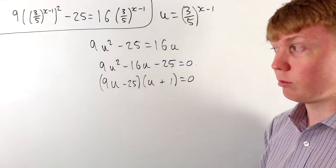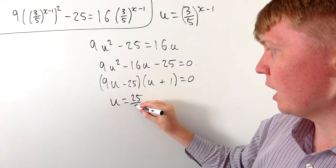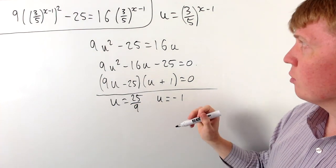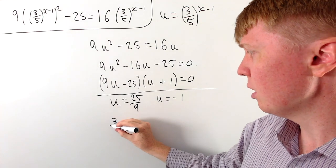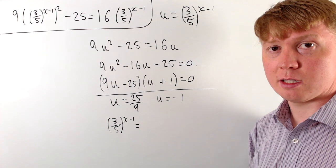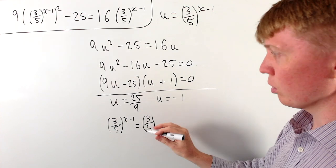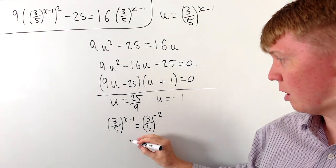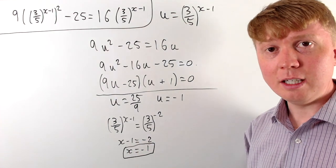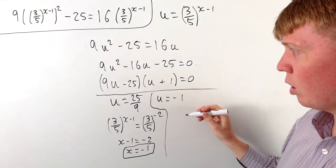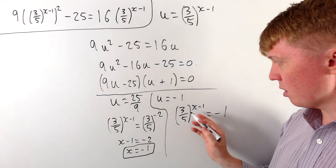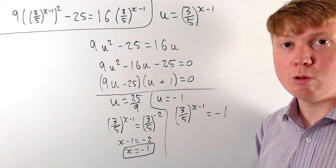We can read off the values of u. First, u equals 25 over 9, or u equals negative 1. With u equals 25 over 9, remember u was 3-fifths to the x minus 1, so 3-fifths to the power of x minus 1 equals 25 over 9. Now 25 over 9 is a nice power of 3-fifths: it equals 3-fifths to the power of negative 2, since we take the reciprocal and square. So x minus 1 equals negative 2, giving x equals negative 1. For the case u equals negative 1, this means 3-fifths to the power of x minus 1 equals negative 1. But a positive number raised to a real power can never be negative, so there are no more real solutions.